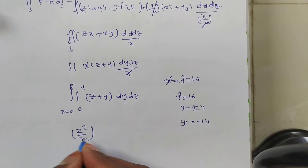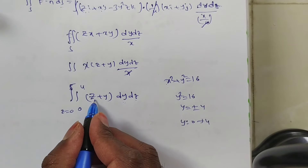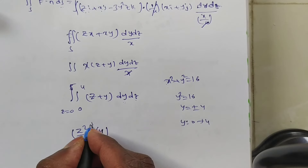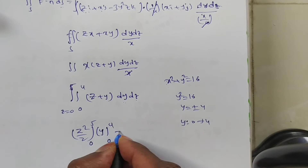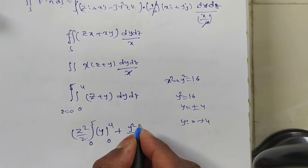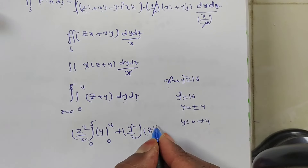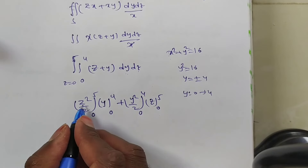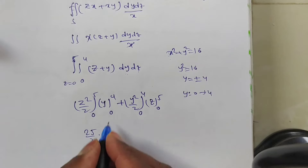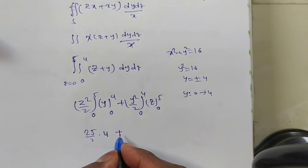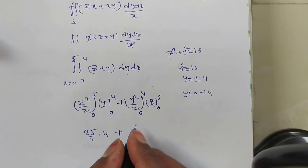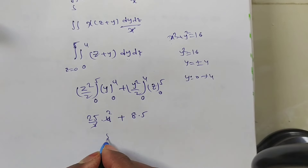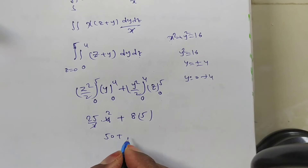Integrating: ∫₀⁵∫₀⁴ (z + y) dy dz. The inner integral gives [z·y + y²/2]₀⁴ = 4z + 8. Then ∫₀⁵ (4z + 8) dz = [2z² + 8z]₀⁵ = 25/2 · 4 + 8·5 = 50 + 40 = 90.